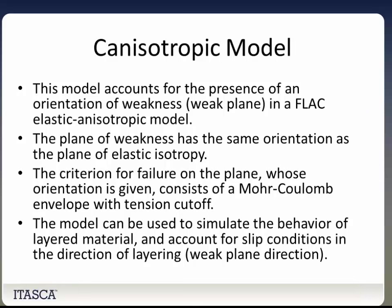Next is the canisotropic model. This model accounts for the presence and orientation of weakness in a FLAC elastic anisotropic model. The plane of weakness is in the same orientation as the plane of elastic isotropy. The criterion for failure consists of a Mohr-Coulomb envelope with a tension cutoff. The model can be used to simulate behavior and account for slip conditions in the direction of layering.